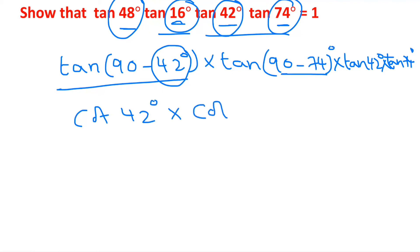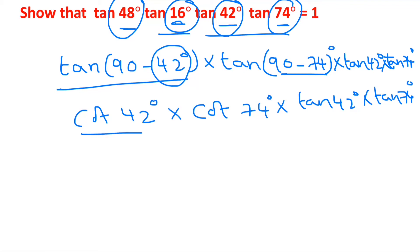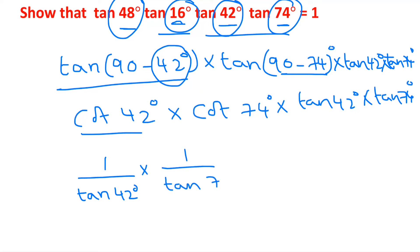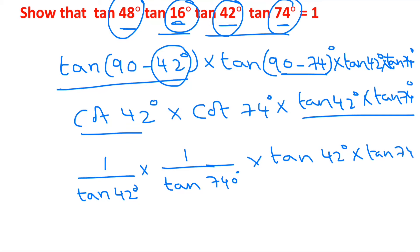Since tan and cot are multiplicative inverses of each other, we can write cot(42°) as 1/tan(42°) and cot(74°) as 1/tan(74°). Now we can cancel tan(42°) with 1/tan(42°) giving 1, and tan(74°) with 1/tan(74°) giving 1. So the answer is 1.